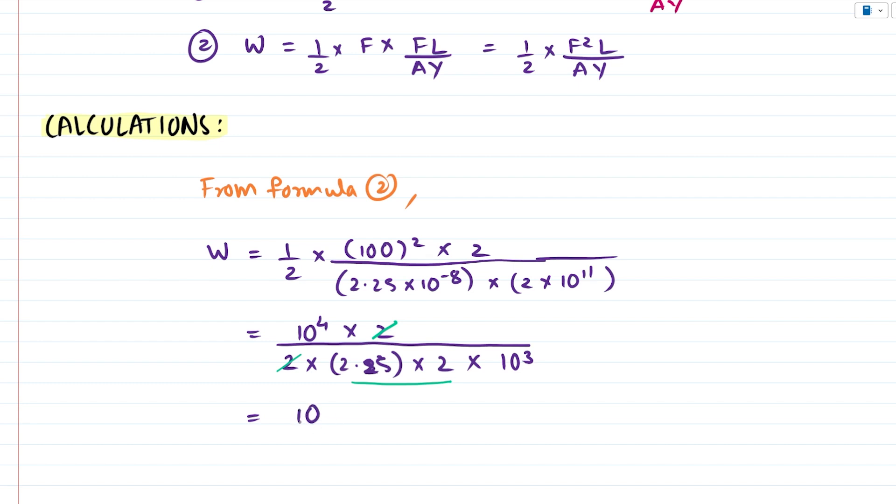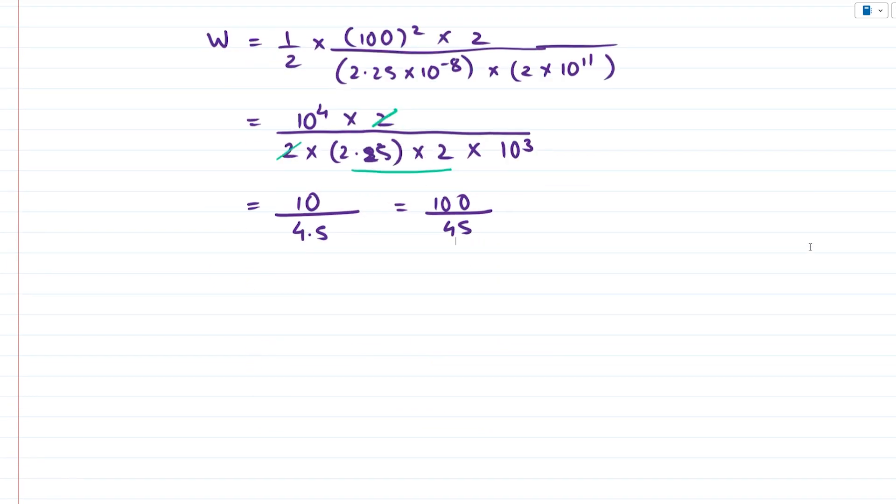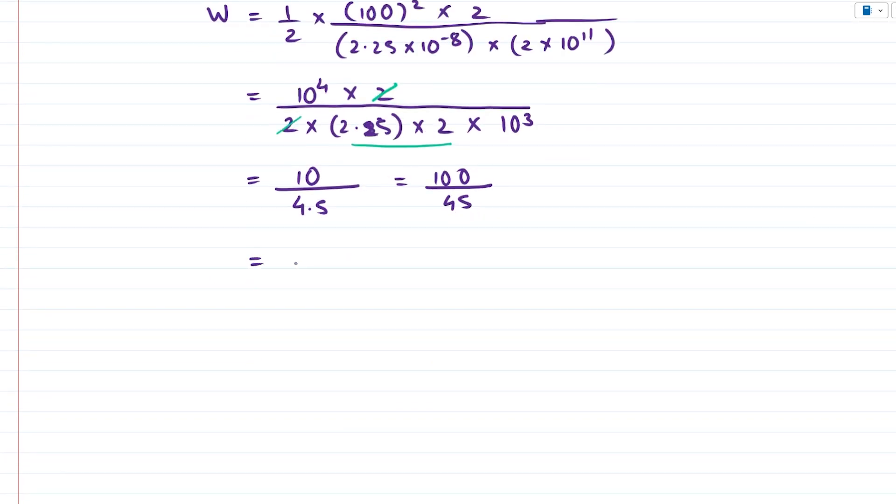And if we were to perform all these calculations we would get 10⁴ divided by 10³ is 10 and 2 × 2.25 gives us 4.5 which can be expressed as 100 upon 45.